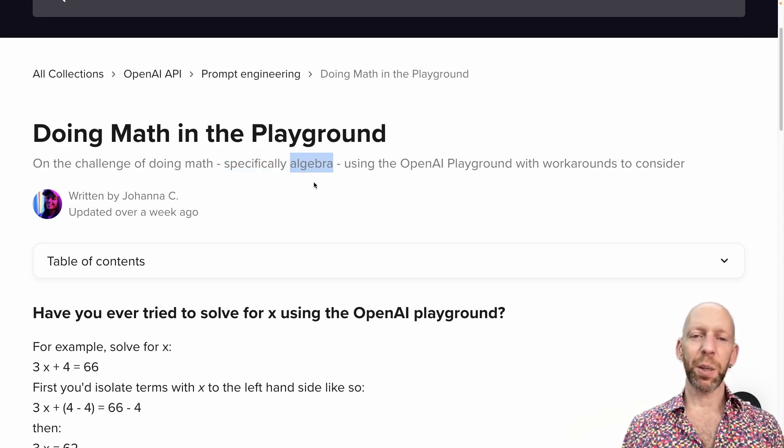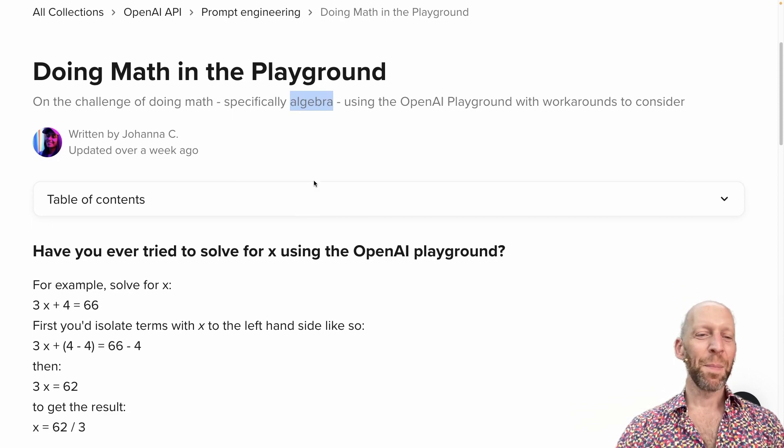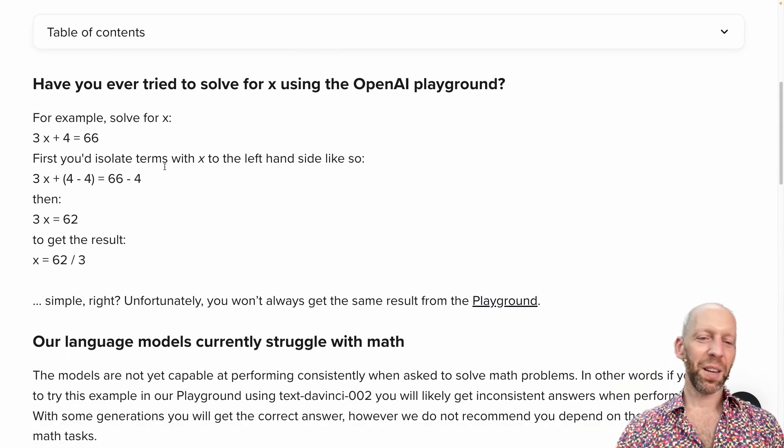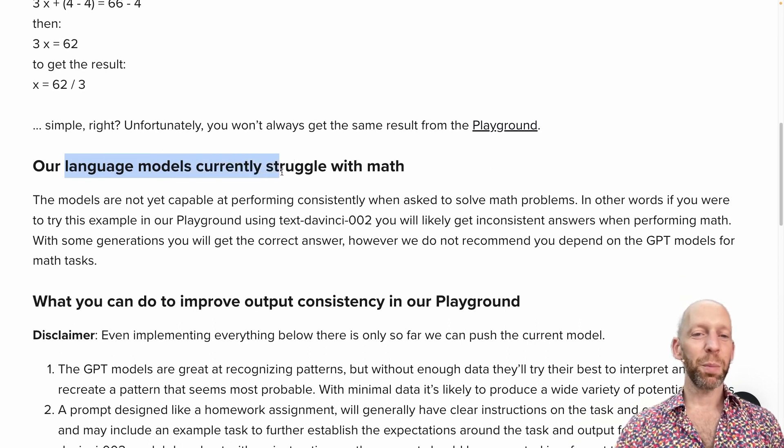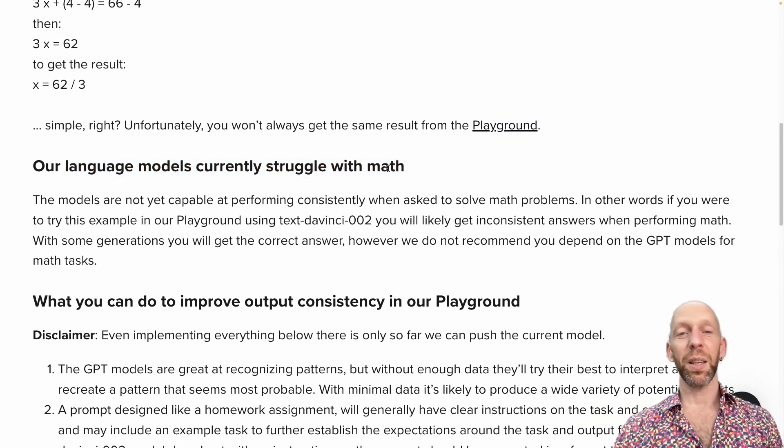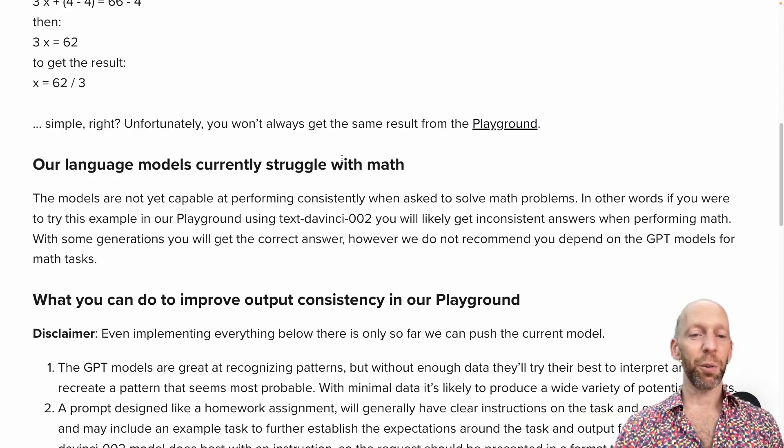Now, in my opinion, ChatGPT is pretty good at algebra. Where it suffers more is with arithmetic, but that's a fine point. Okay, so here, yeah, they're just highlighting that they are aware that their language models struggle with math in particular, with precision, with exact precision in arithmetic problems.